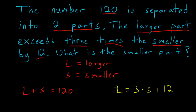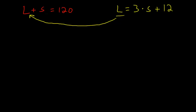From here, we can take this equation that's already solved for L and plug that into L in the first equation. So now we have 3S plus 12, this is L now, plus S equals 120. If I combine all the S's,